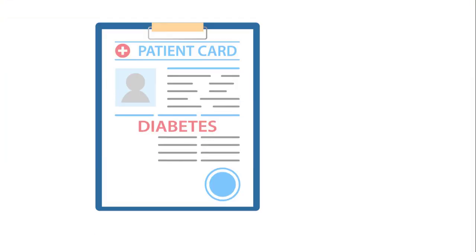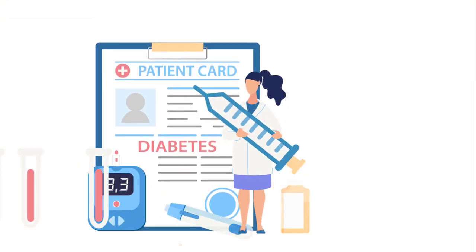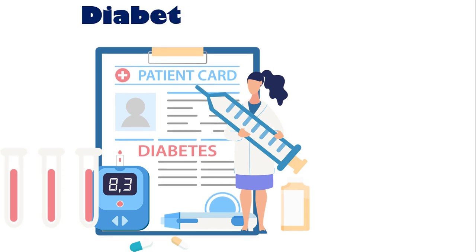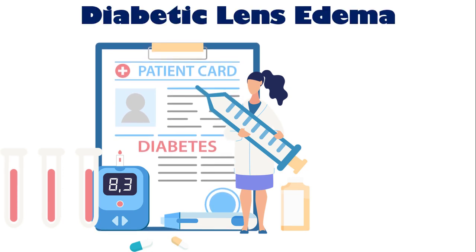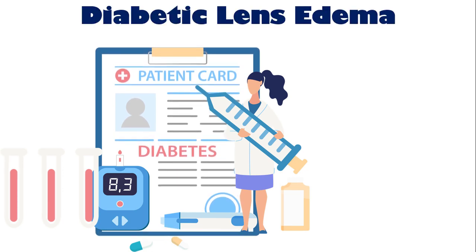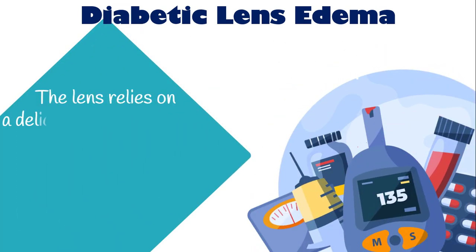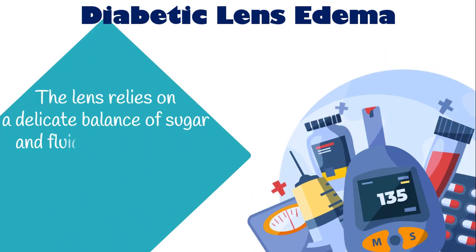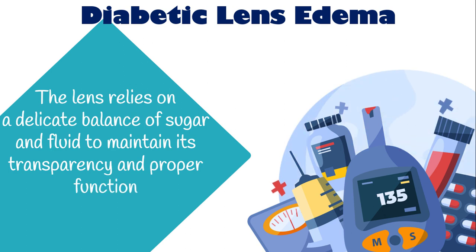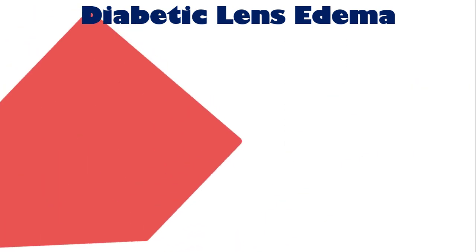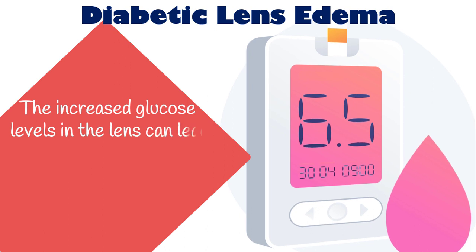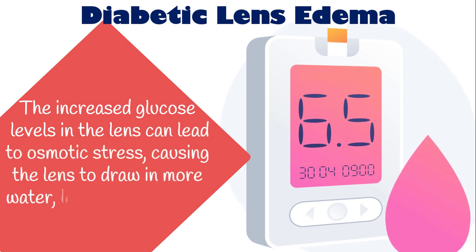High blood sugar levels in diabetes can contribute to the development of diabetic lens edema. Excess glucose can accumulate in the lens of the eye. The lens relies on a delicate balance of sugar and fluid to maintain its transparency and proper function. The increased glucose levels in the lens can lead to osmotic stress, causing the lens to draw in more water, leading to swelling.